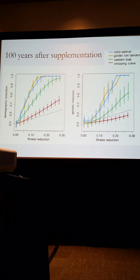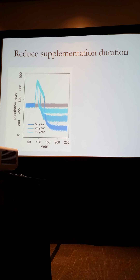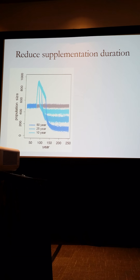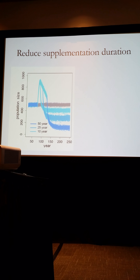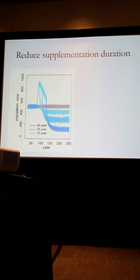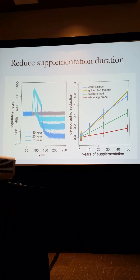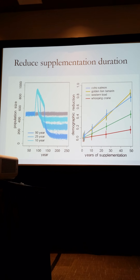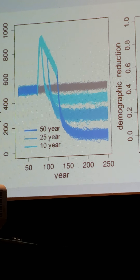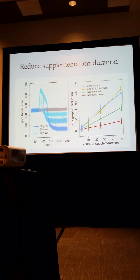We started by looking at the duration of supplementation. This is population size of coho salmon populations where we supplemented for 50, 25, and 10 years. The point being that if we decreased the duration of supplementation, we could limit the effects on the wild population. When we looked across all four species, we found a negative and fairly linear relationship between the number of years of supplementation and the demographic reduction observed between supplemented and non-supplemented populations. I think this is promising — it shows we can pull back and reduce the negative effects on the wild population we might otherwise expect.